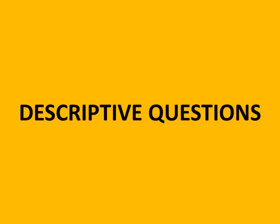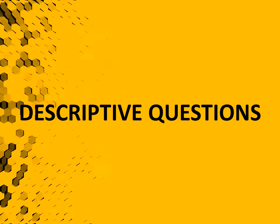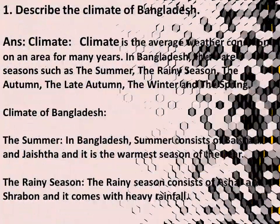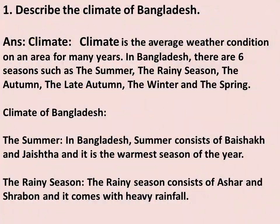Now we will learn descriptive questions. Number 1: Describe the climate of Bangladesh. Answer: Climate is the average weather condition of an area for many years.